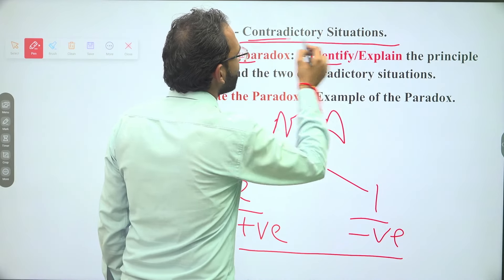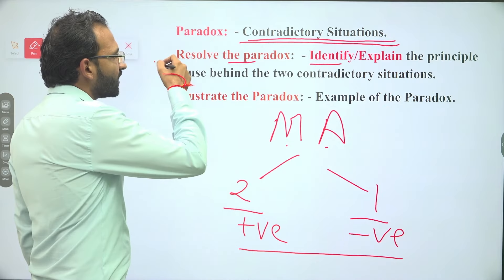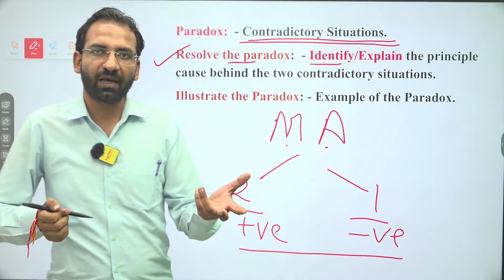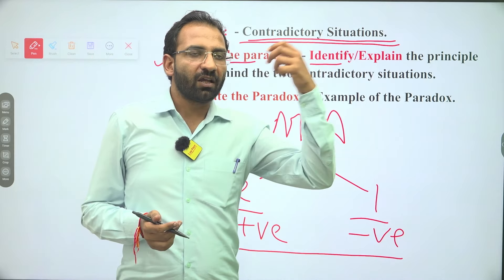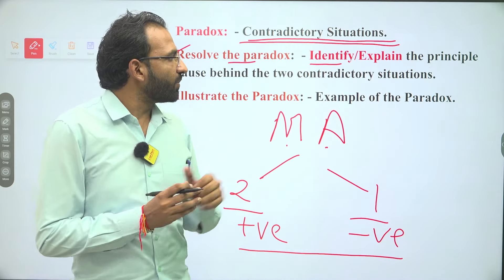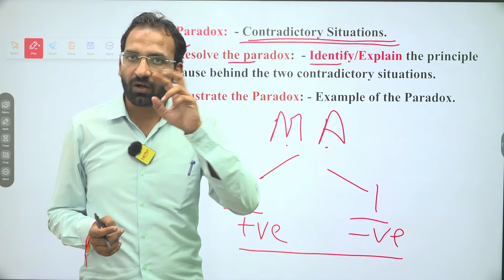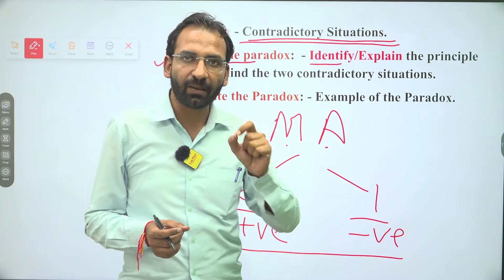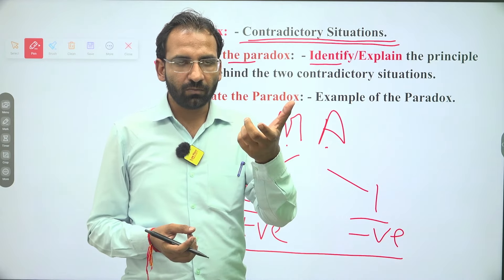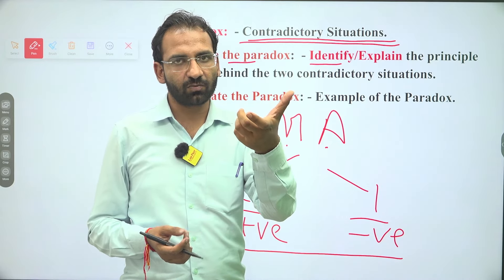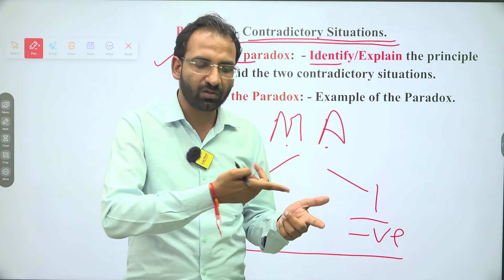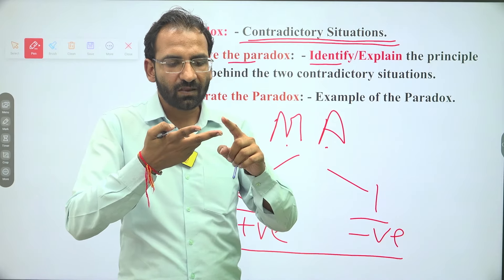To deal with paradox questions: Identify contradictory situations. Resolve the paradox — find the solution of the paradox. Evaluate the paradox. Explain the contradictory apparent paradox. Identify the principle cause behind the paradox. The questions will ask you to either identify or resolve or explain the paradox.